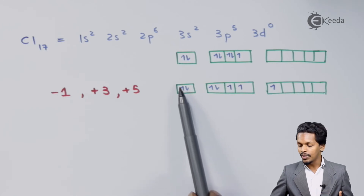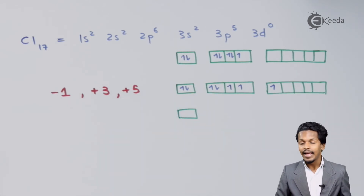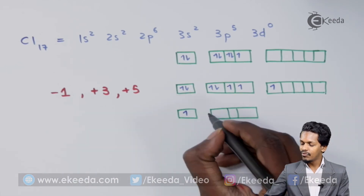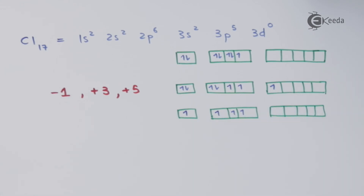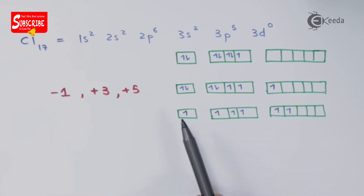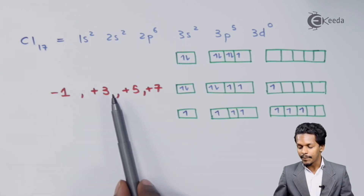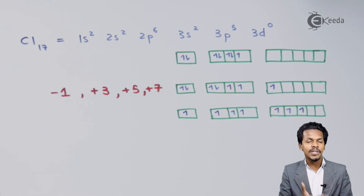And suppose if we excite further electrons to the orbital, the S orbital will consist of only 1 electron and the P orbitals will have 3 unpaired electrons, making it 1, 2, 3, 4, 5, 6, and 1 electron gets excited, giving us the oxidation state of plus 7. So this is what the common oxidation states from Chlorine to Iodine are. The plus 4 and plus 6 oxidation states can also exist but they exist in the form of oxy acids of Chlorine and Bromine.